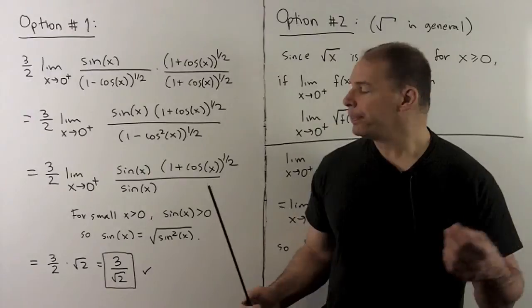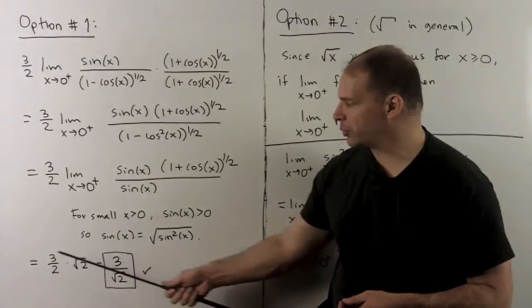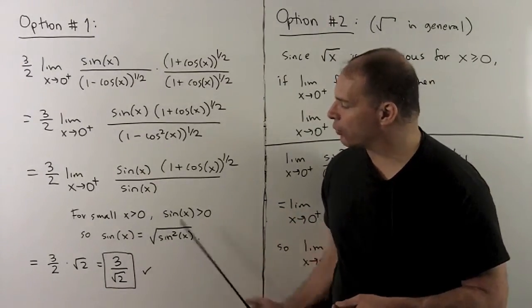If I put a zero in there, we're going to get two to the one-half, or square root of two as promised. And that gets our three over square root of two.